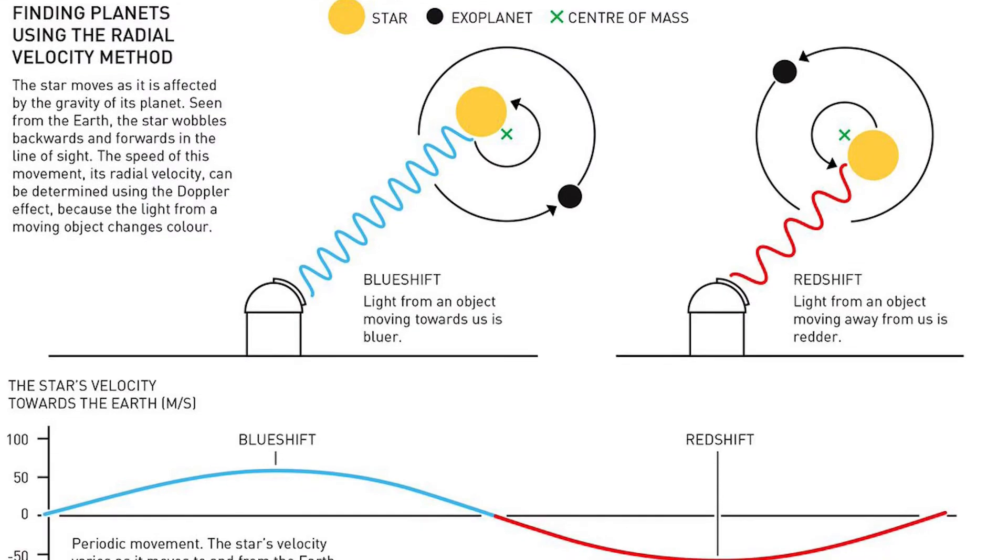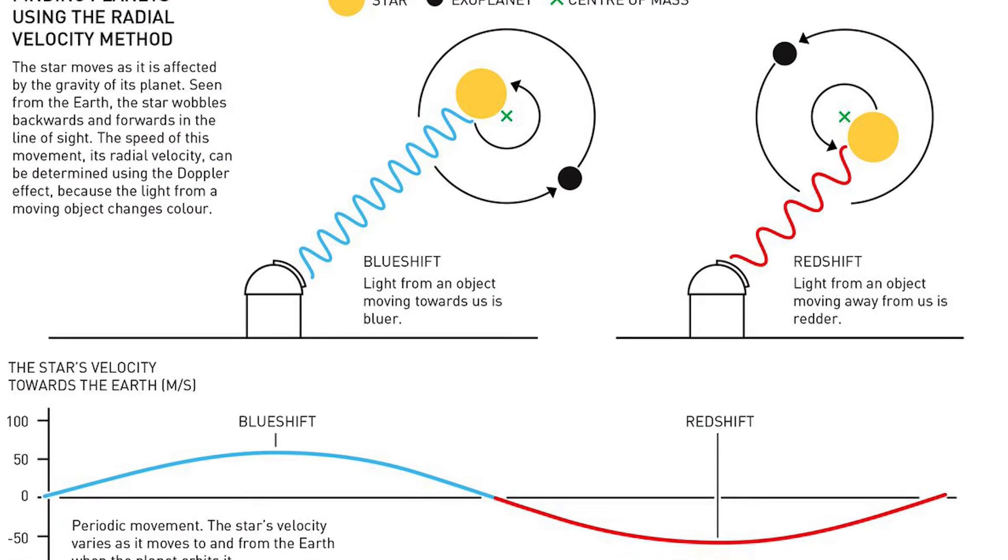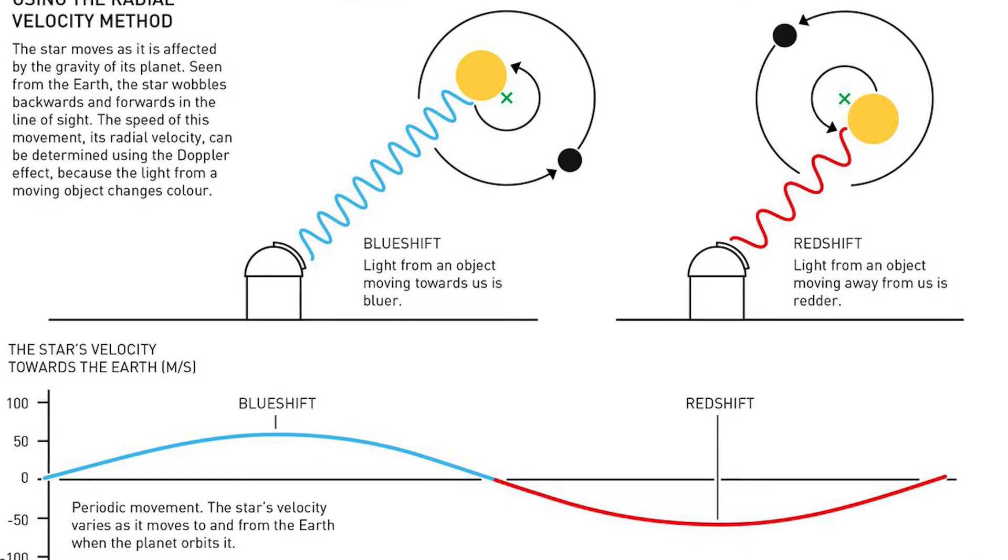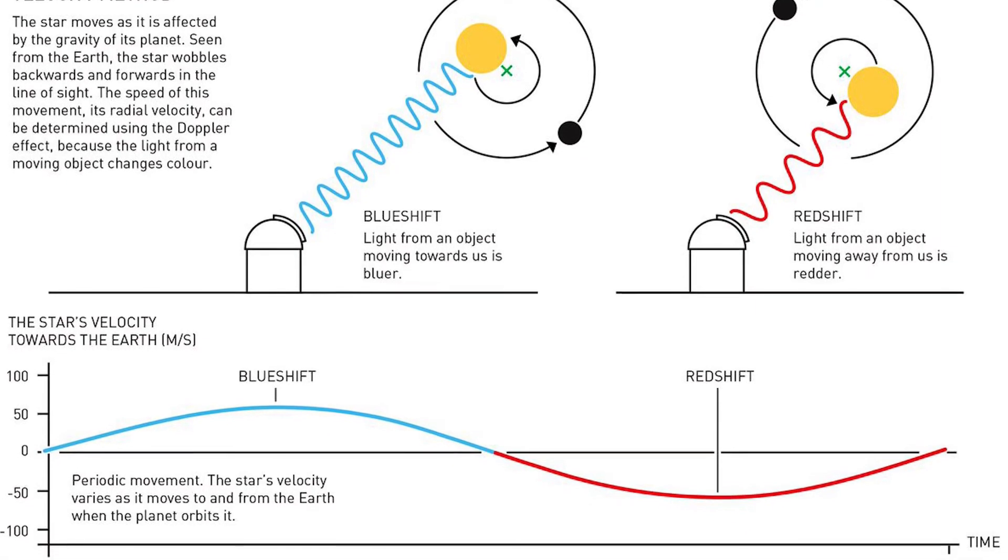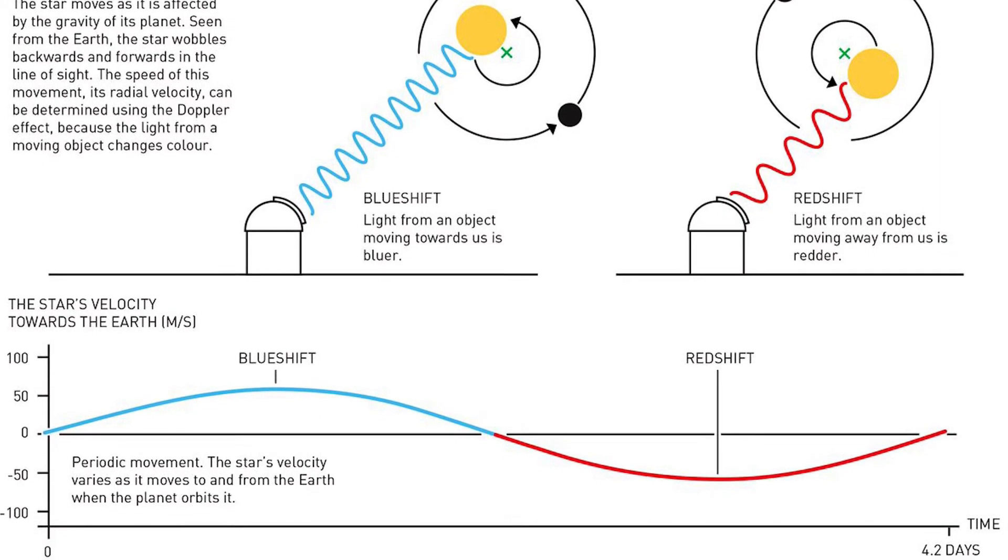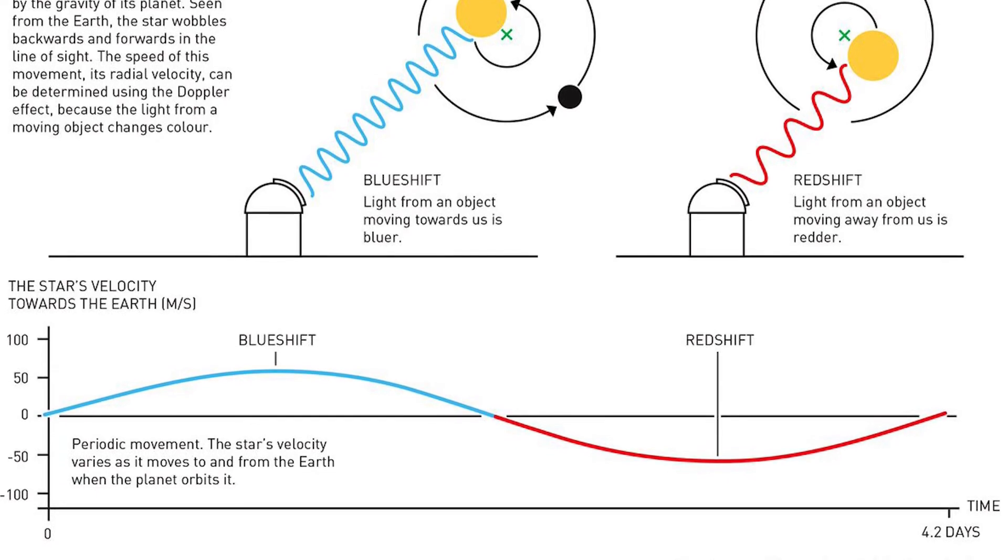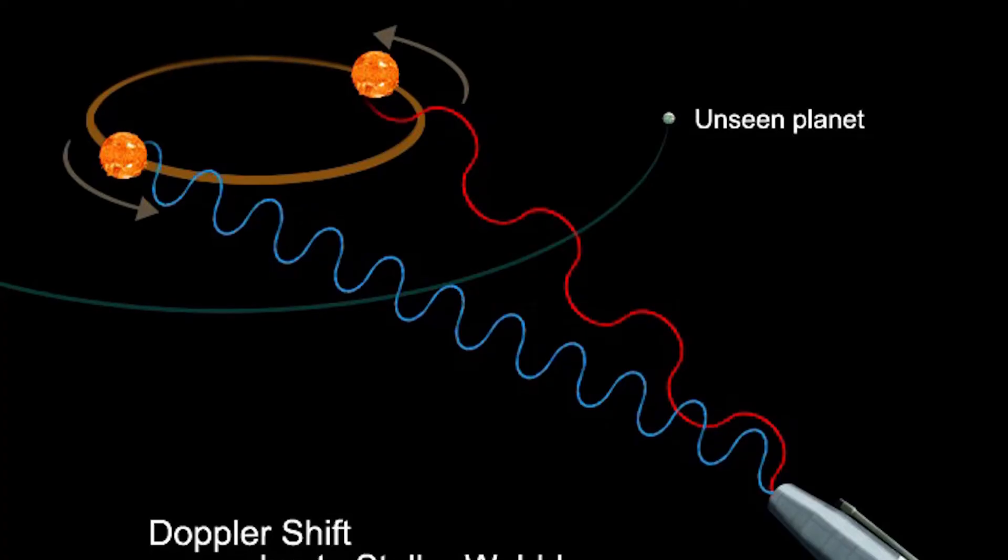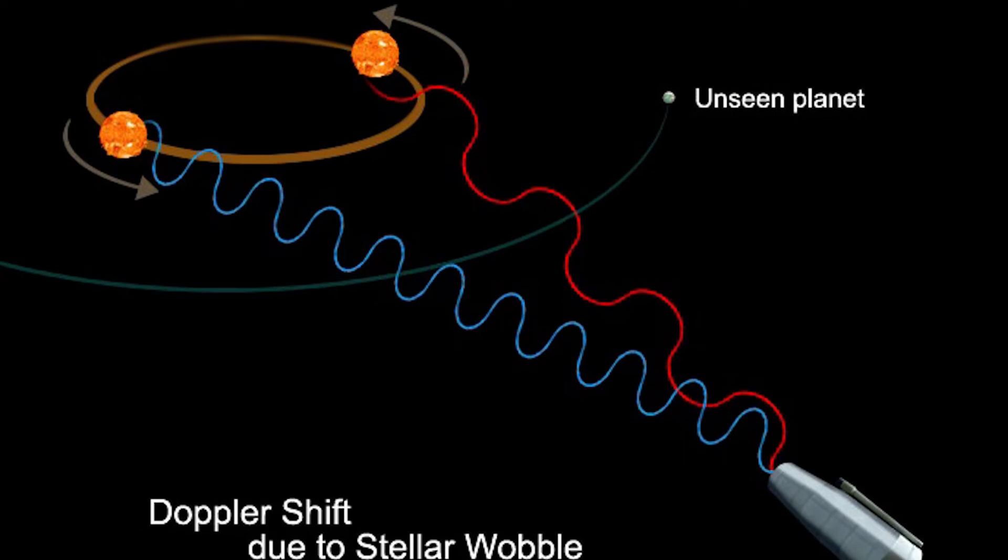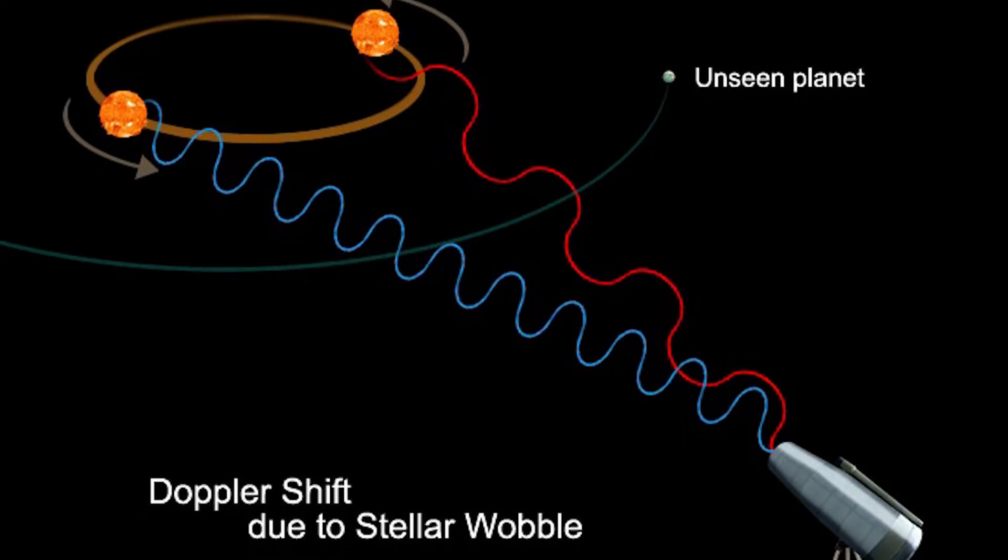Another significant benefit is the method's ability to impose precise limitations on a planet's mass. Although a star's radial velocity can only provide estimations of a planet's minimum mass, separating the planet's own spectral lines from those of the star can provide measurements of the planet's radial velocity. This permits astronomers to calculate the inclination of the planet's orbit, which allows them to calculate the planet's real mass. This approach also eliminates false positives and offers information about the planet's composition.